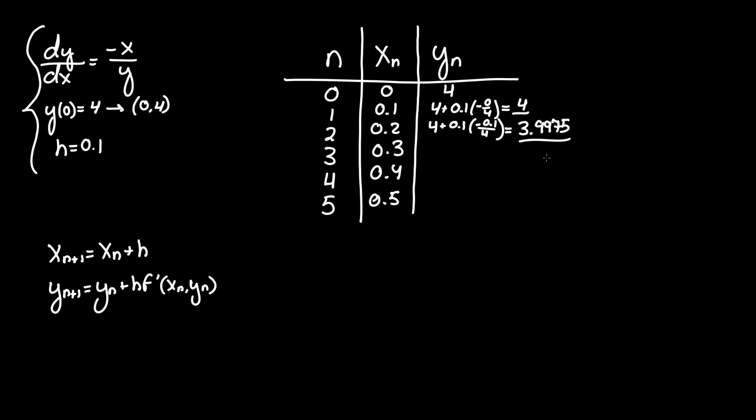Now y of two has become 3.9975. We have to plug that back into this formula for the next iteration, so 3.9975 plus h times now we take x of two which was negative, putting that in the front, 0.2 over y of two which is 3.9975. Plugging that into the calculator you get 3.9925.